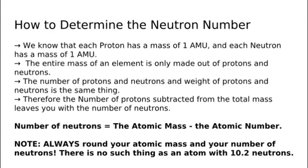Neutrons do not have charge so we cannot use the same trick we used for electrons. But neutrons do have mass. We know that each proton has a mass of 1 atomic mass unit, and each neutron has a mass of 1 atomic mass unit, while electrons have none. This means the entire mass of an element is only made out of protons and neutrons. Since each proton weighs 1 and each neutron weighs 1 we know that the number of neutrons and the weight of neutrons is the same thing. The same is true for protons. Therefore the number of protons subtracted from the total mass leaves you with the number of neutrons. Number of neutrons equals the atomic mass minus the atomic number. Note, always round your atomic mass and your number of neutrons. There is no such thing as an atom with 10.2 neutrons.